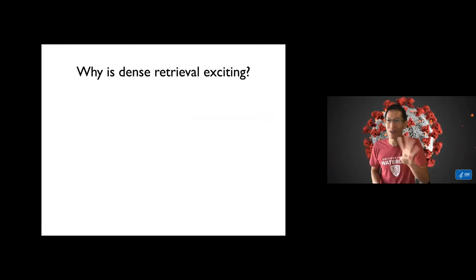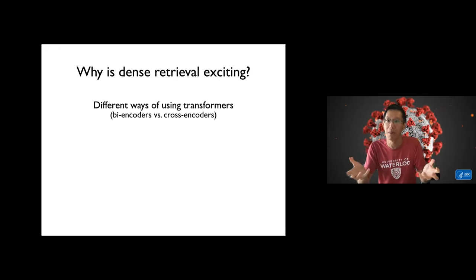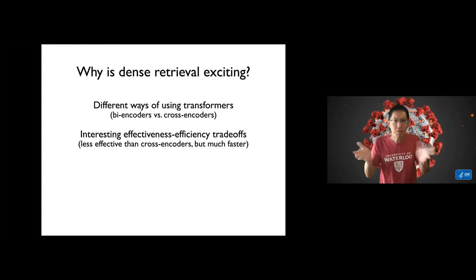It's exciting for four different reasons. This is a fundamentally different way of using transformers. In re-rankers it's usually what's known as a cross-encoder. You take the query, you take the document, you lump them together, you pump them through the transformer, you get out some classification decision. By contrast, this dense retrieval method is known as a bi-encoder, it's a completely different way of using transformers.